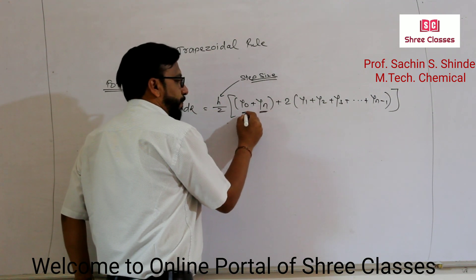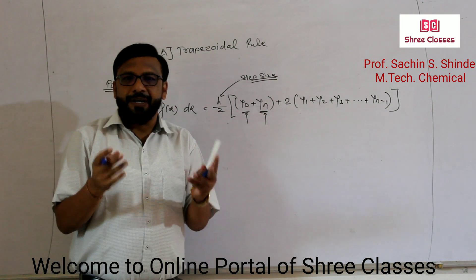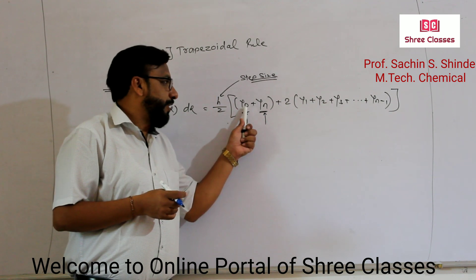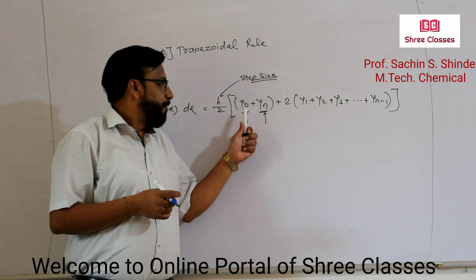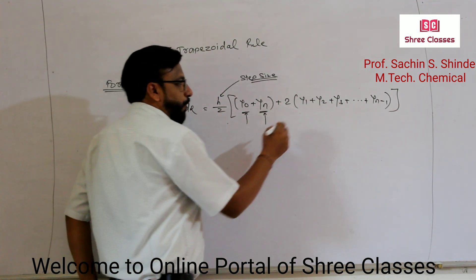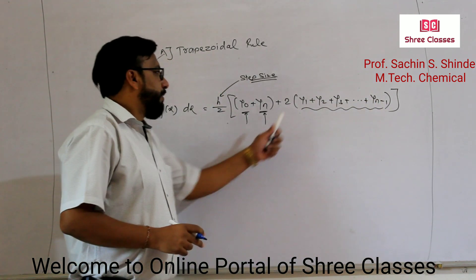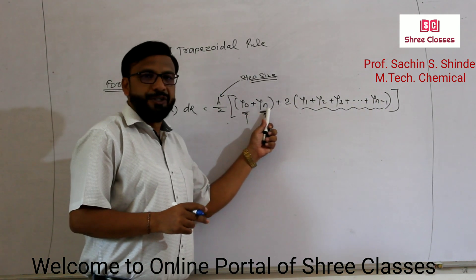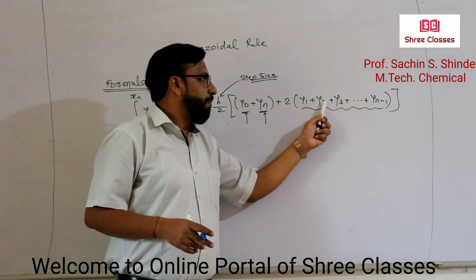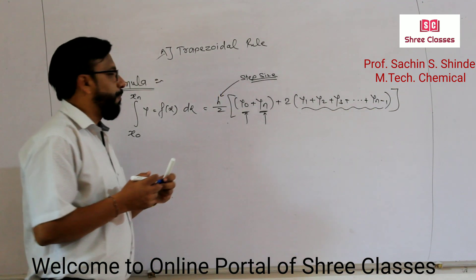y0 and yn: y0 is the first value of y and yn is the last value of y. We have an x-y table given in the problem, and from that table we can find the values of y0 and yn. The terms in between y0 and yn are y1 plus y2 plus y3 up to yn minus 1. This is the formula for the Trapezoidal Rule.